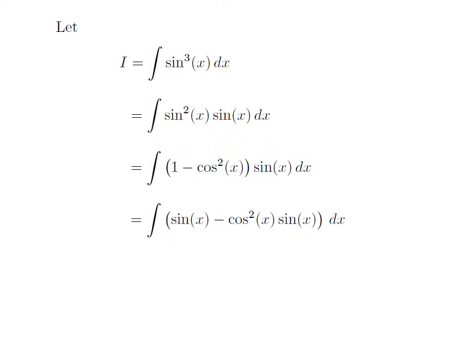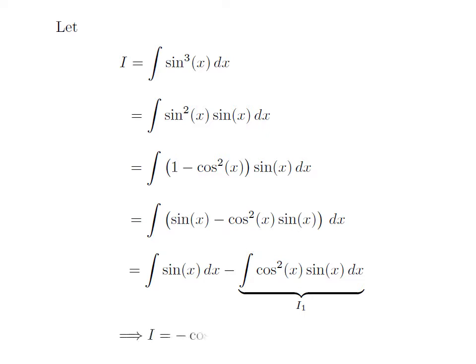Expanding the above expression, we get i is equal to the integration of sin(x) minus cos²(x) · sin(x) with respect to x. Applying the linearity property of integration, i is equal to the integration of sin(x) with respect to x, minus the integration of cos²(x) · sin(x) with respect to x. Let's denote the integration of cos²(x) · sin(x) with respect to x by I1. Since the integration of sin(x) is -cos(x), i is equal to -cos(x) minus I1.